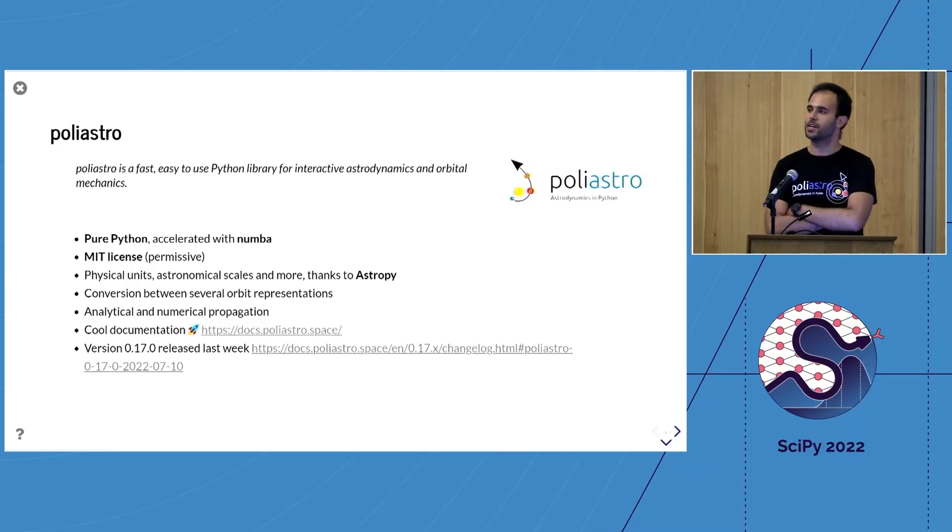What is PolyAstro? It's a Python library for interactive astrodynamics and orbital mechanics. It's pure Python, accelerated with Numba, and licensed under MIT, so it's permissive. It's built on top of AstroPy, which provides handling of physical units, astronomical time scales, reference frames, and transformations. You can do conversion between different orbital representations, several propagation algorithms, and so forth. It has cool documentation and we do conference-driven development—the last release was three days ago just for this event.